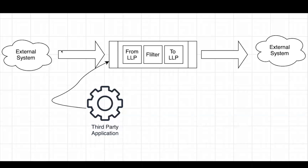A third way to resubmit messages is using third-party software. Similar to our first architecture example, we have an external source system sending messages over TCP/IP or LLP to our Iguana channel, which is a from-LLP filter to LLP component, and that sends it to our external destination over TCP/IP. If messages coming in from the source system start to fail — because the destination system is unavailable or for some other reason — what we can do is download those messages and use a third-party HL7 simulator to retrieve those messages and point the simulator back to our from-LLP component to send the messages over the port.